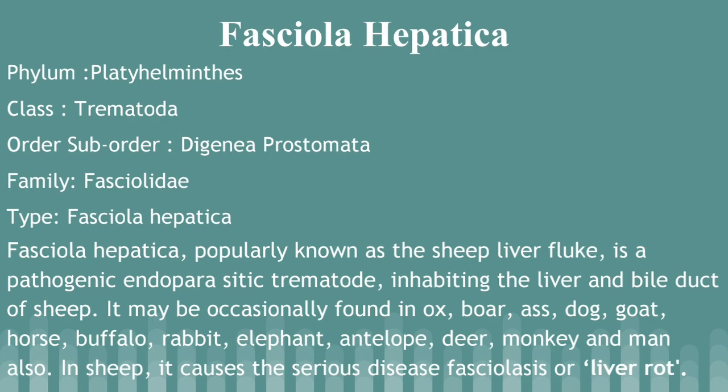The important example is Fasciola hepatica, popularly known as sheep liver fluke. It is a pathogenic endoparasitic trematode inhabiting the liver and bile ducts of sheep. It may be occasionally found in ox, dog, goat, horse, buffalo, rabbit, elephant, antelope, deer, monkey, and man. In sheep, it causes a serious disease called fasciolosis or liver rot.